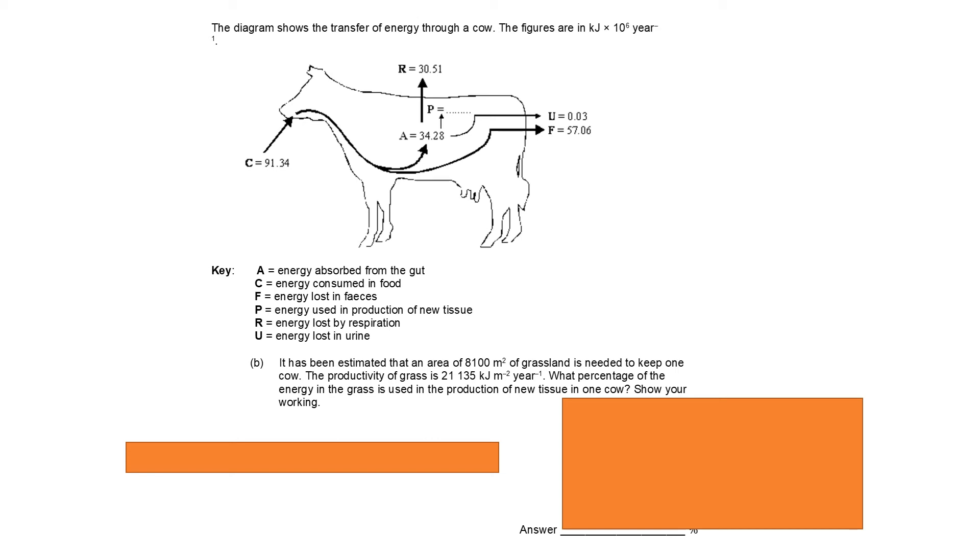So let's have a look at this calculation. One thing to bear in mind here, and this is where this information in the question becomes really important, is it might be very easy to think I calculated the P value in the last question, that was 3.74, so I'll just put that in at the top of my fraction. 3.74 doesn't sound to me like it sort of matches up with these other numbers. These other numbers are a lot bigger. And that's because these are in kilojoules times 10 to the power of 6 per year. So we've got to multiply that number, that 3.74, by 10 to the power of 6 for the top of our fraction. So we've got 3.74 times 10 to the power of 6 divided by 21,135 times 8,100, which gives us 0.0218. And then to convert that into a percentage, we need to multiply by 100. So the answer is 2.18.